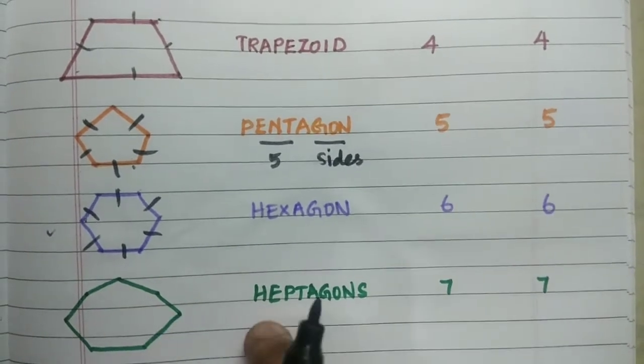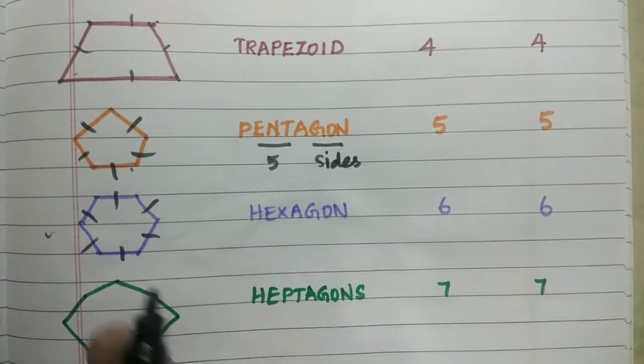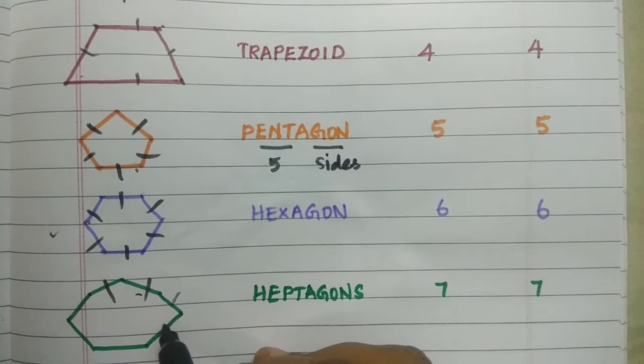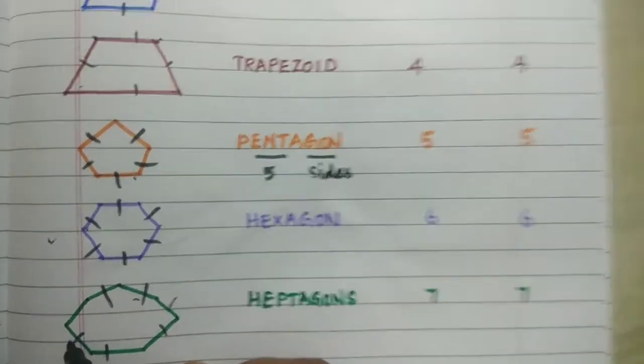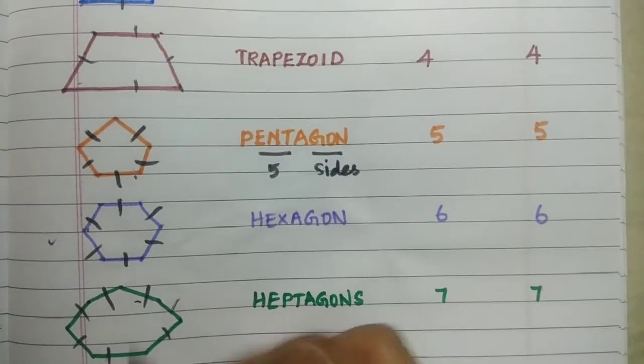Next is a heptagon. Heptagon means seven-sided. So it has seven sides. You can see here one, two, three, four, five, six and seven. So seven sides and seven vertices.